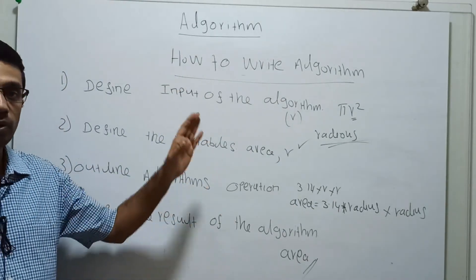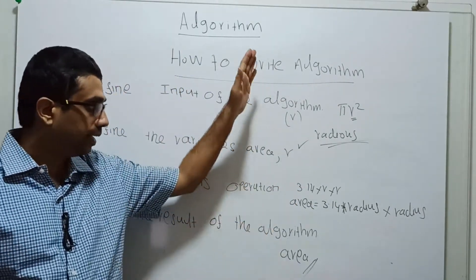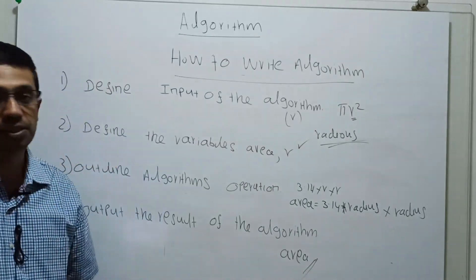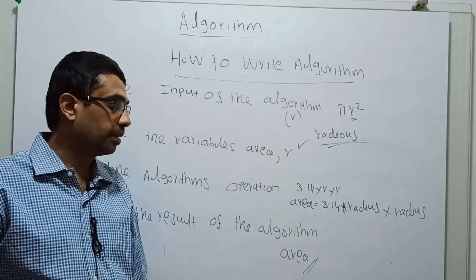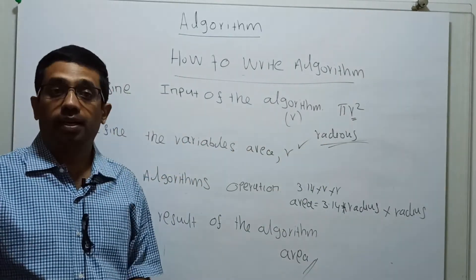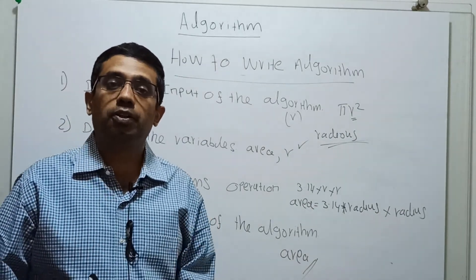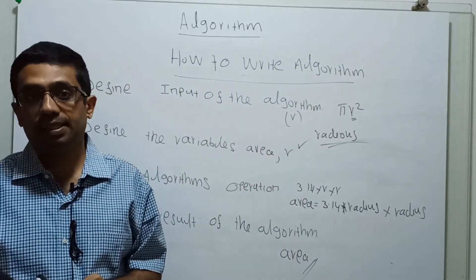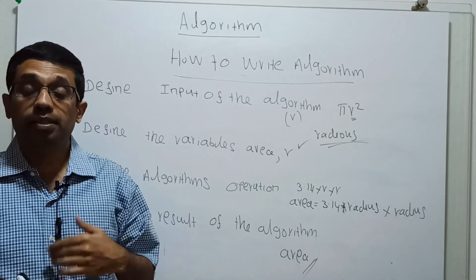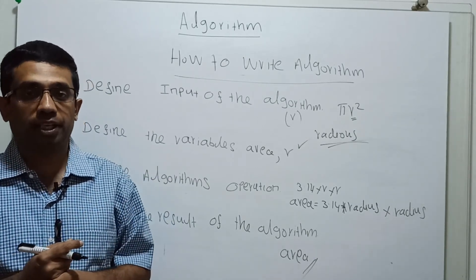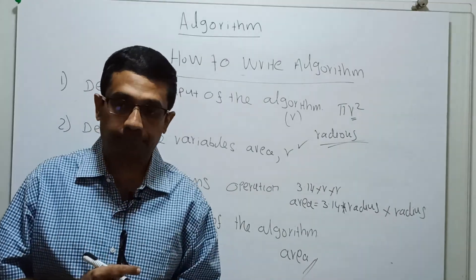These are the four important steps you need to be clear on when writing your algorithm. If you are clear on these four steps, it will be very easy to write your algorithm. Thanks for watching the video lecture — kindly subscribe to the channel to get updates on new videos.